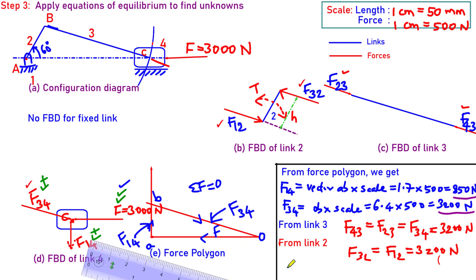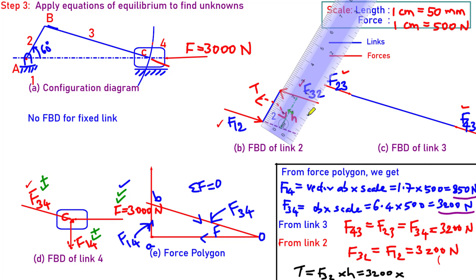Finally we have to find torque T is equal to either F32 or F12 multiplied by h, which is nothing but 3200 multiplied by h. I need to measure h now.